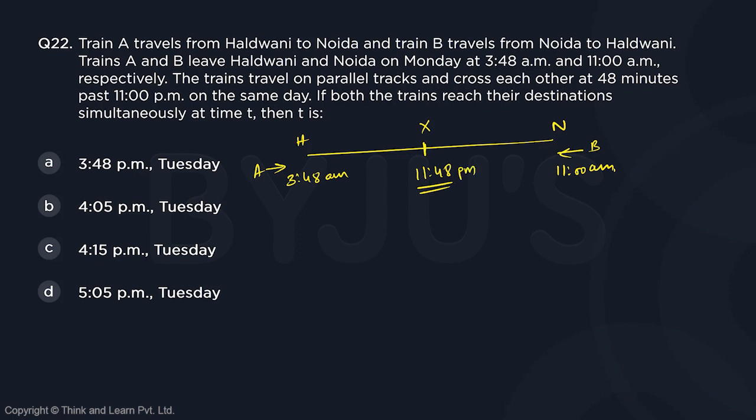If both trains reach their destination simultaneously at time T — so they are both reaching at the same time — then what is the time T? Let's go ahead and solve this question one step at a time.